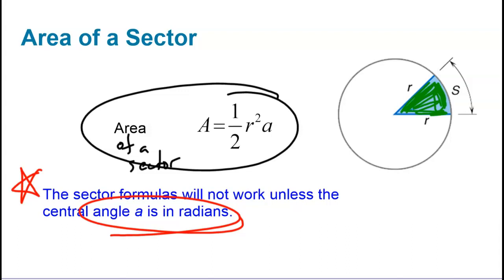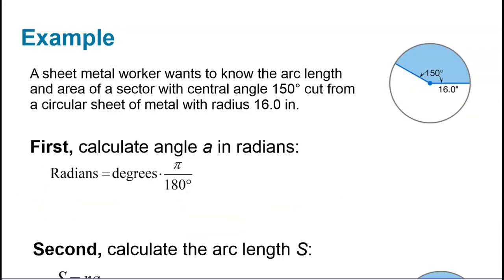So let's go ahead and look at this actually on a problem. So in this problem, a sheet metal worker wants to know the arc length and area of a sector. It has a central angle of 150 degrees cut from a circular sheet of metal with a radius of 16 inches. So the first thing that you want to do is you want to calculate the angle in radians. And so we're going to go ahead and work this problem out. And we are given degrees. And you can see in the problem over here, we're given degrees.